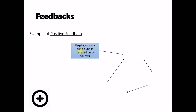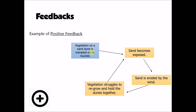Positive feedback, on the other hand, has an amplifying effect. A change occurs and positive feedback makes it more and more severe. For example, if vegetation on a sand dune is trampled by tourists, the sand becomes exposed and is blown away by the wind. With sand lost, vegetation struggles to regrow and hold the dunes together, causing more sand to be exposed, even more to be lost, and even less vegetation to regrow — each cycle amplifying the effect.